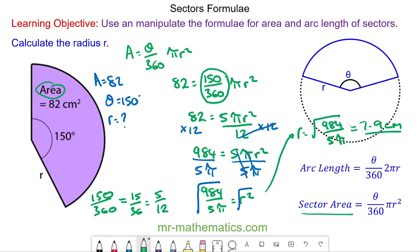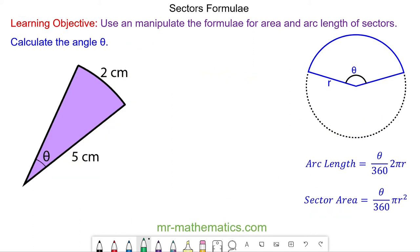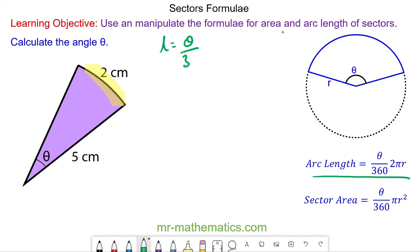Let's try another question — you might want to pause the video and try it yourself before resuming. We've been given the arc length, which is 2 centimeters, so we're going to use the arc length formula: L equals theta over 360 times 2πr. The arc length is 2 centimeters and the radius is 5 centimeters, and we're going to work out the value of theta.